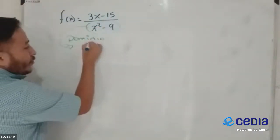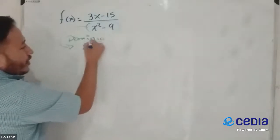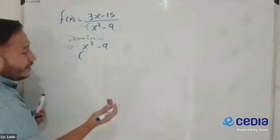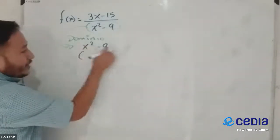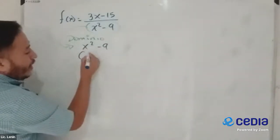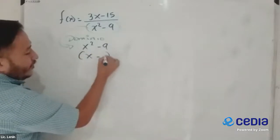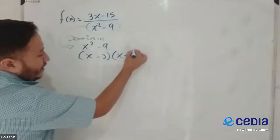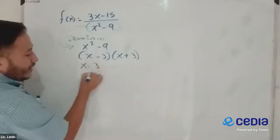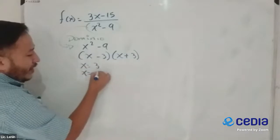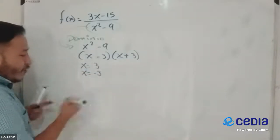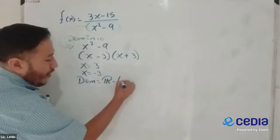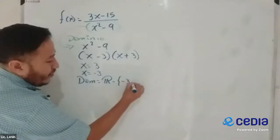El dominio lo encontramos con el denominador igualando a cero. Y como es una función, o como tenemos elevado al cuadrado, puedo aplicar diferencia de cuadrados, que me quedaría x menos 3, x más 3. Y me queda como respuesta x es 3 y x es igual a menos 3. El dominio sería entonces todos los reales, menos lo que acabamos de encontrar, x menos 3 y 3.